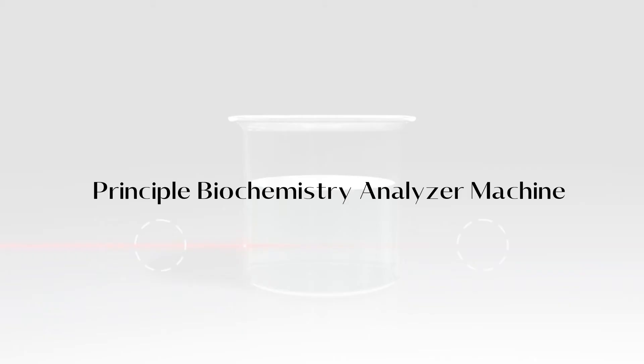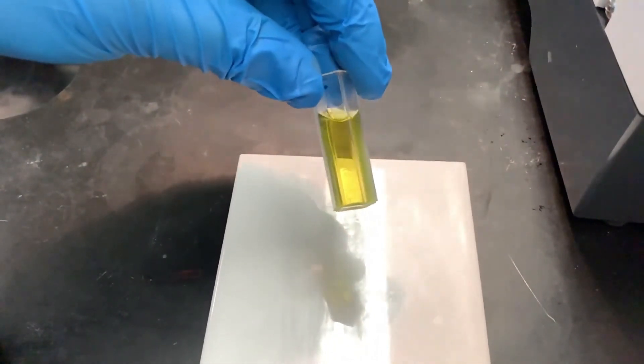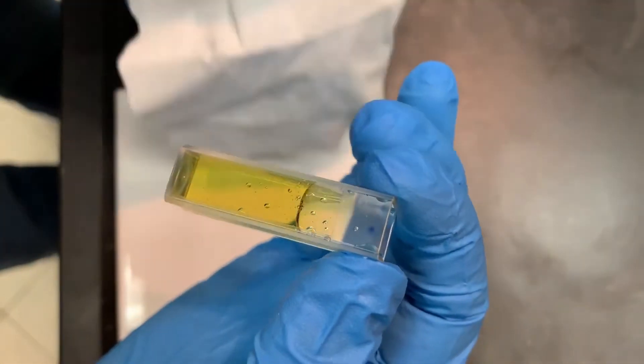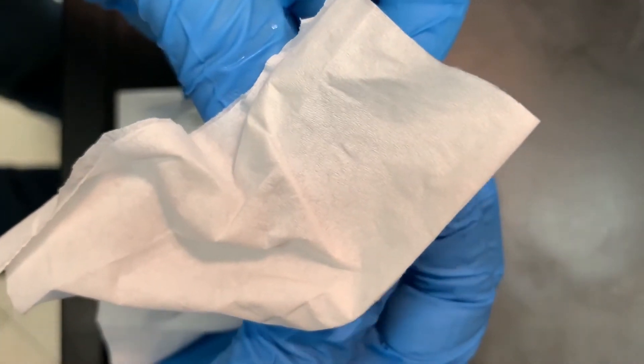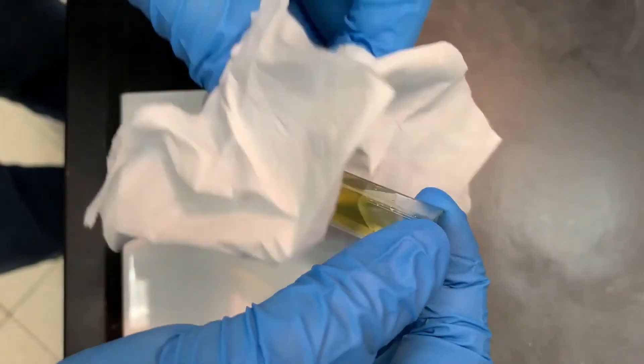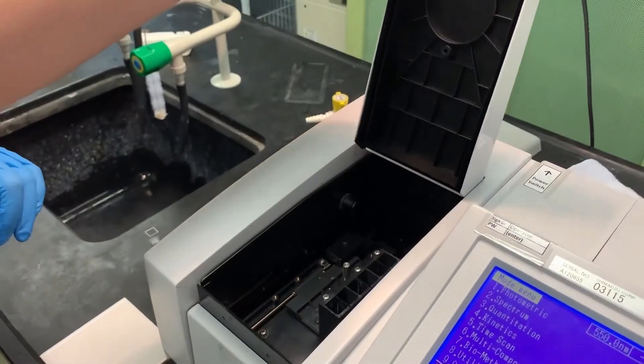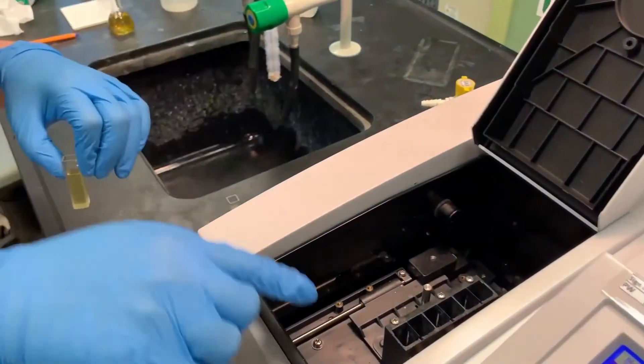Now let's look into the principle of a biochemistry analyzer machine. An automatic biochemical analyzer utilizes this kind of reaction and converts the quantity of a specific substance in blood into an amount of color change for measurement. The analysis method of measuring the amount of color change is called the colorimetric analysis method.